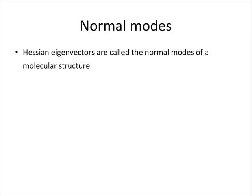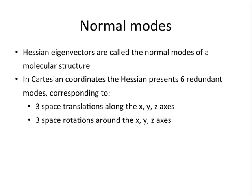We have seen the features of a potential energy surface and we would like now to analyze its stationary points. This is usually done by evaluating the Hessian. In this Hessian, the eigenvectors are usually called the normal modes of a molecular structure. When this evaluation is done in Cartesian coordinates, the Hessian presents six redundant modes.